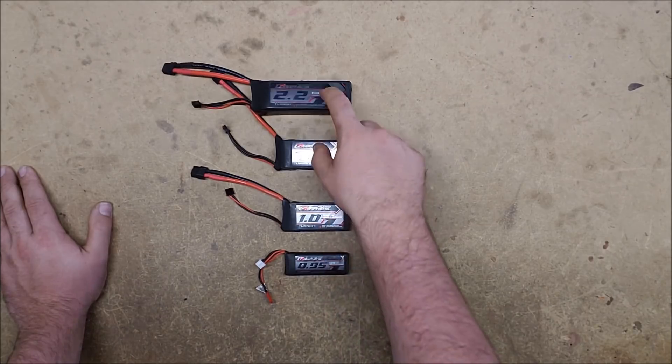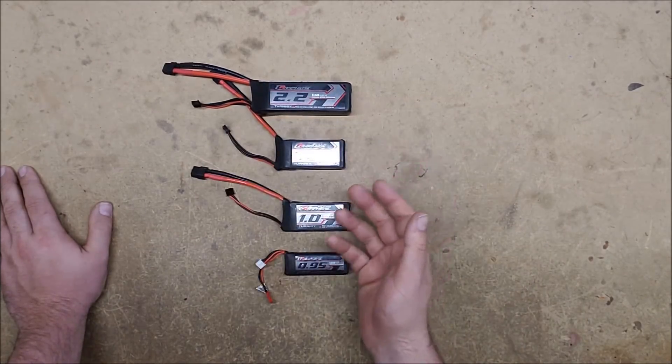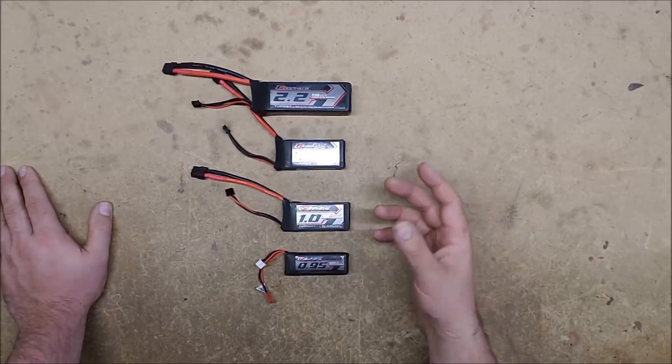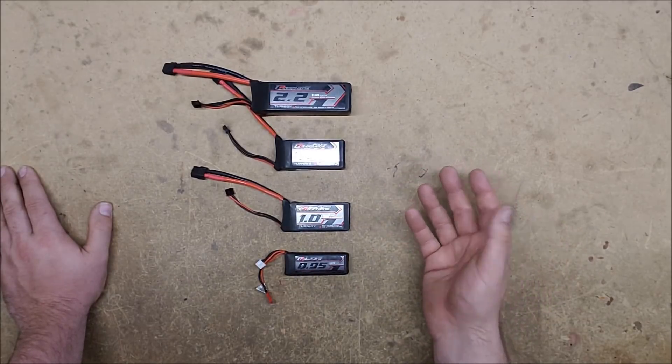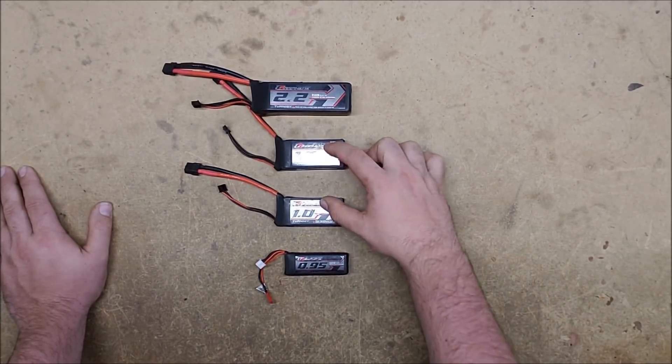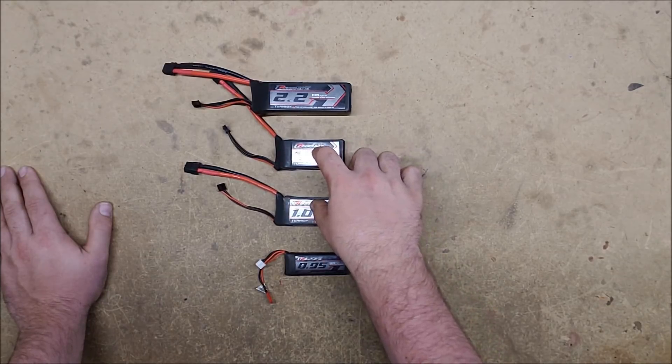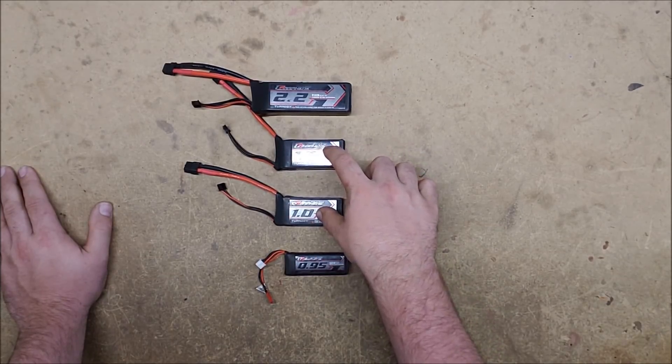So 2S, 3S, and really the only difference that that has is the voltage, as well as often the capacity. But not always, as we are going to see. These two both have the same capacity. They're both 1,000 milliamps. But this one's 2S, and this one's 3S.